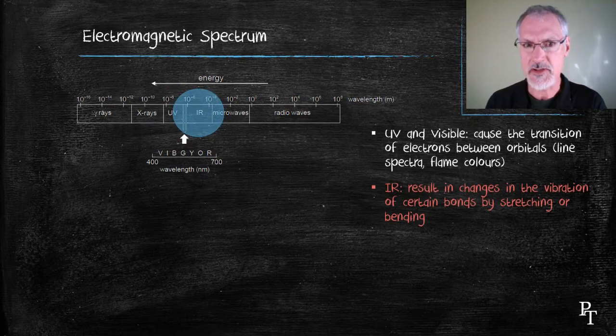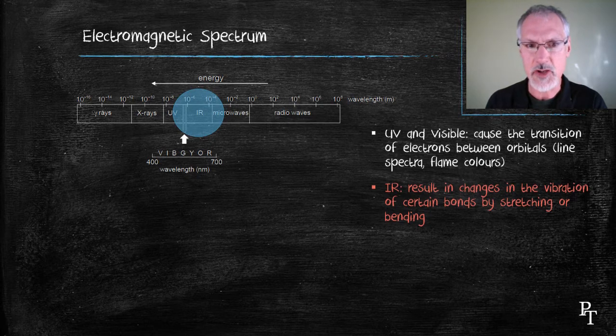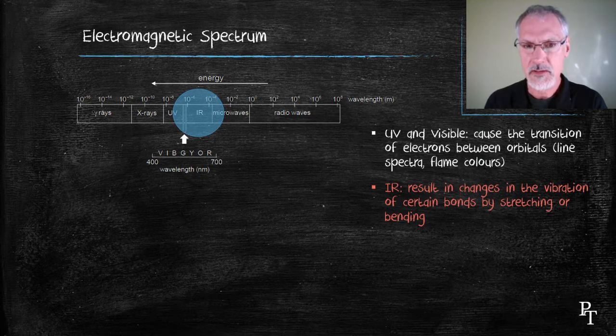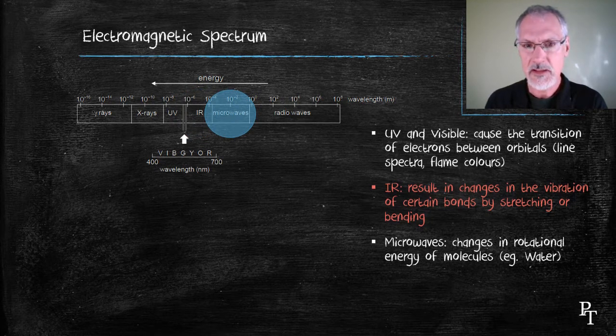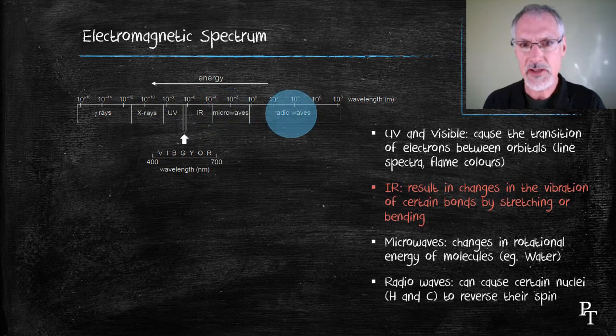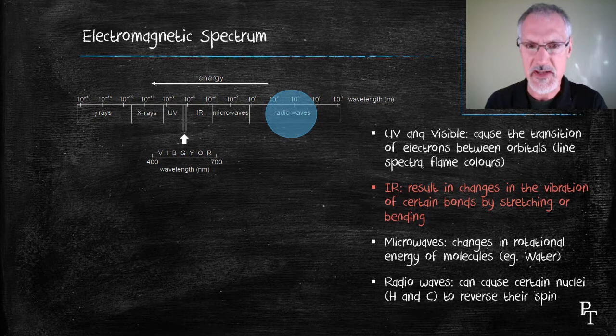Infrared radiation, the subject of today's talk, causes certain covalent bonds to vibrate. Microwaves will cause molecules to rotate more quickly. And when matter absorbs radio waves, it can cause particles in the nucleus to essentially spin in the other direction. This is the basis of NMR.